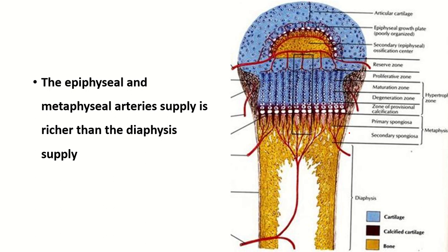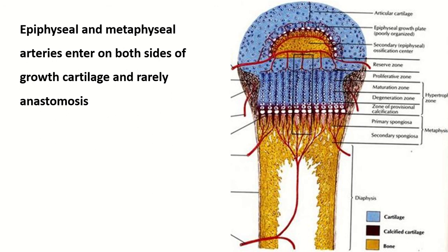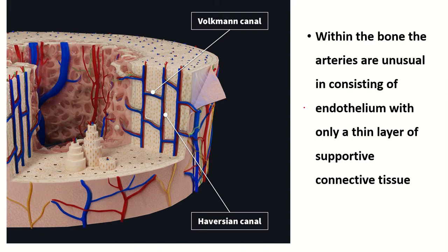The epiphyseal and metaphyseal artery supply a richer vascular network than the diaphyseal system. The epiphyseal and metaphyseal arteries enter both sides of the growth cartilage and rarely anastomose with each other.